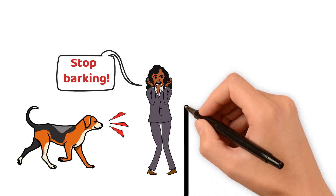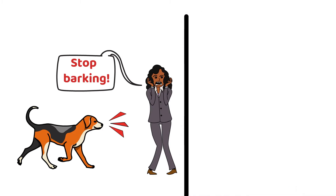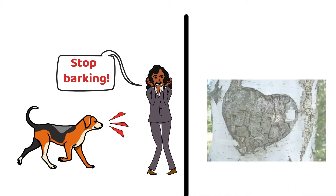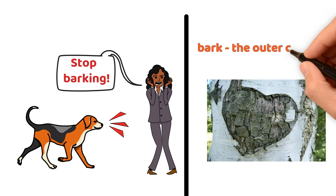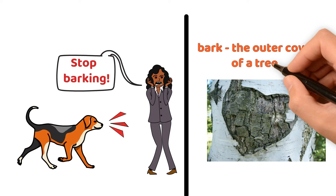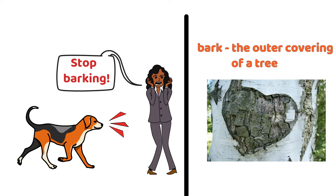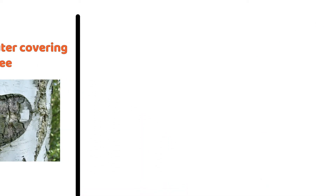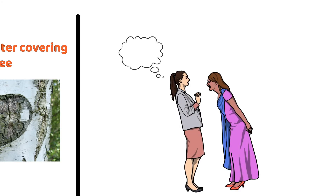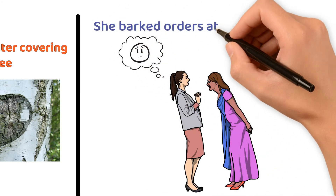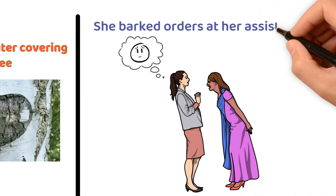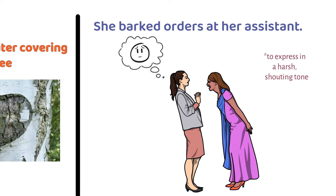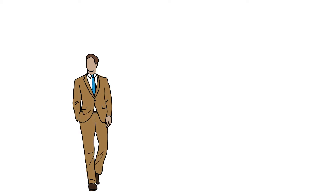Stop barking. Bark is a sound most commonly produced by dogs. But it is also the outer covering of a tree. She barks orders at her assistant — bark means to express in a harsh, shouting tone.